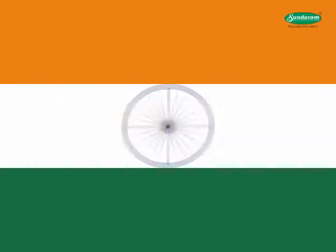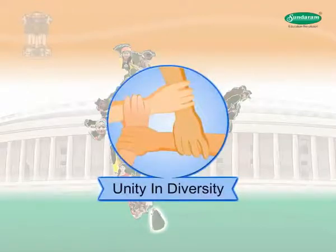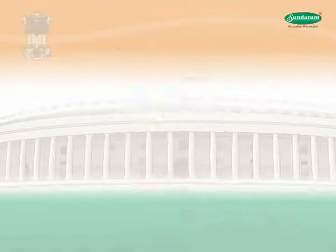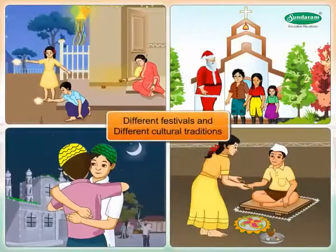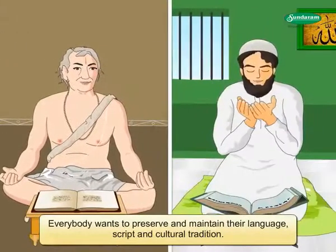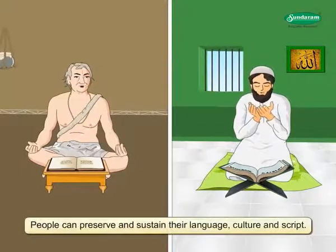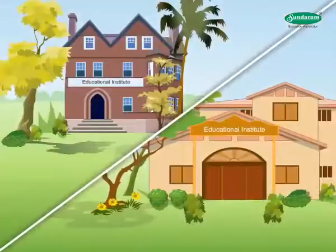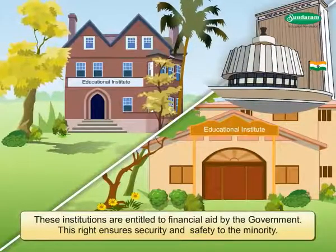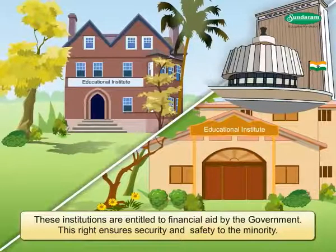Educational and Cultural Rights. India is known as a country having unity in diversity. People belonging to different religion, language, culture, and caste live together. People living in different parts of the country have different festivals and different cultural traditions. Everybody wants to preserve and maintain their language, script, and cultural tradition. With the help of this right, people can preserve and sustain their language, culture, and script. Citizens have the right to establish independent educational institutions, which are entitled to financial aid by the government like other government-aided institutions. This right ensures security and safety to the minority.